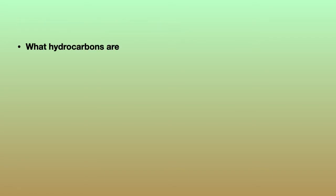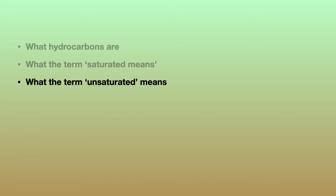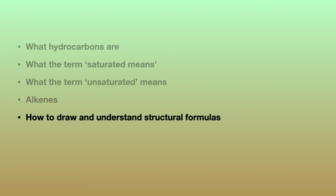You should understand what the word hydrocarbon means. A hydrocarbon is a compound made of carbon and hydrogen only. You should understand the term saturated. A saturated hydrocarbon has only single carbon to carbon bonds. On the other hand, an unsaturated hydrocarbon contains at least one carbon to carbon double bond. A good example are the alkenes. You should be familiar with alkenes. You should also know how to draw and understand structural formulas, especially for this video full structural formulas, but I will mention shortened ones as well.